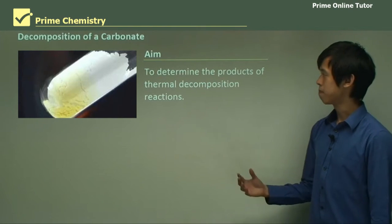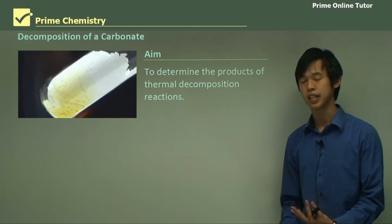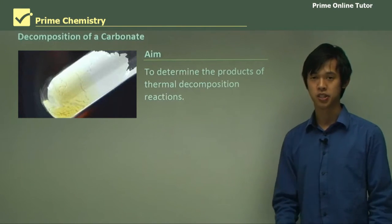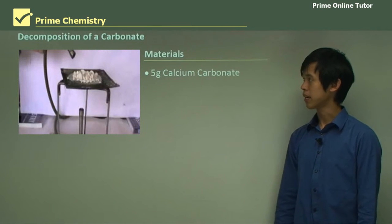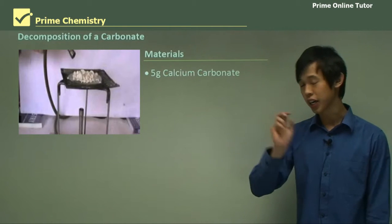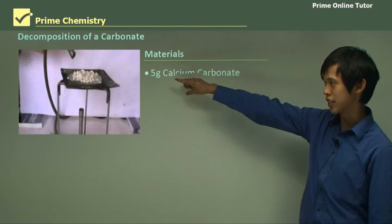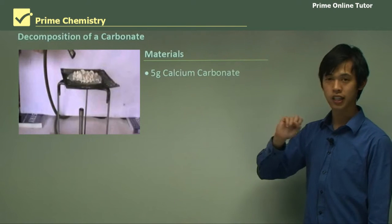So our aim is to determine the products of thermal decomposition reactions, and in particular for carbonate decomposition reactions. So what do we need? Well, we need 5 grams of calcium carbonate, so we're not going to use copper carbonate like in that picture. We're going to use this whitish calcium carbonate in the picture.